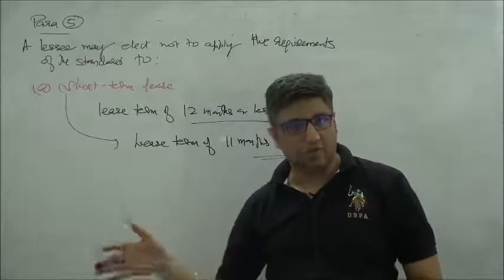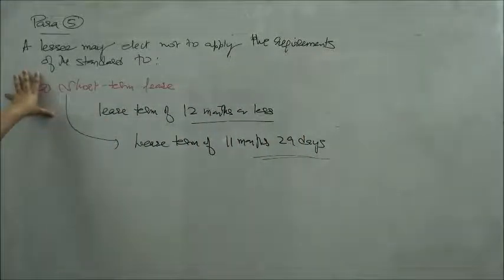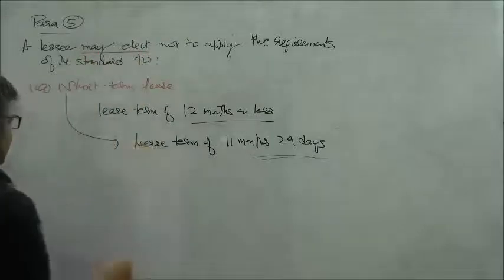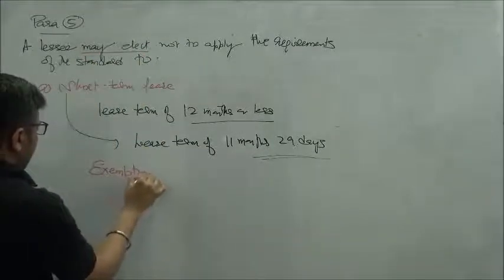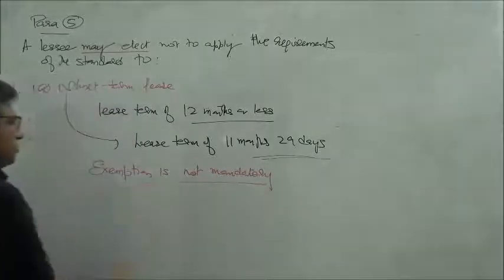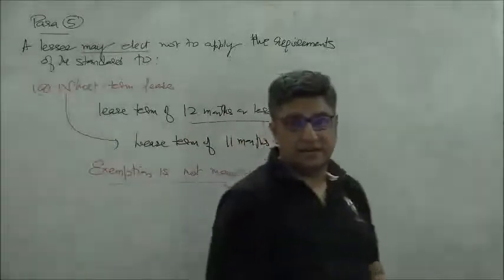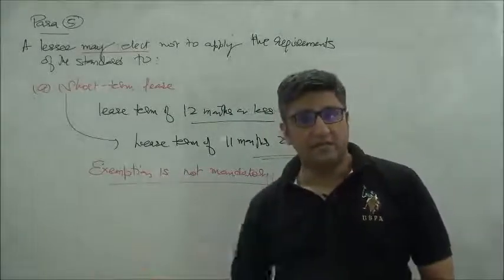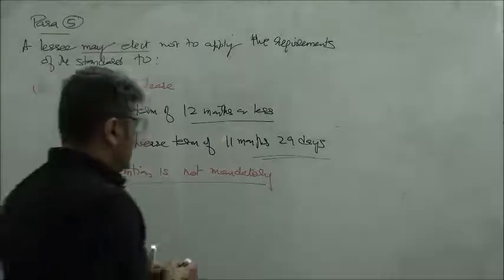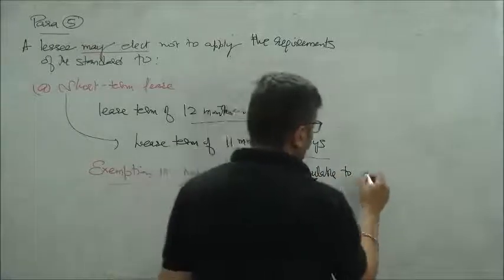The corresponding liability is also ignored for balance sheet recognition—that's the exemption route. Importantly, an entity may elect, which means the exemption is not mandatory. You have a choice. If you want to show even a short-term lease as part of your balance sheet with the asset and liability, you're welcome to do that.